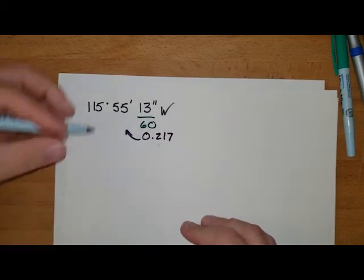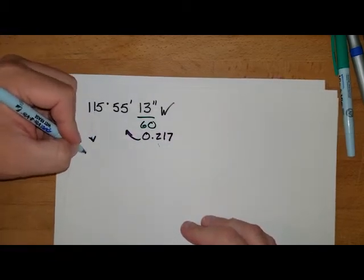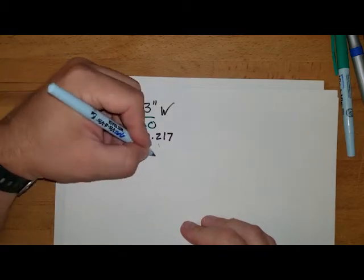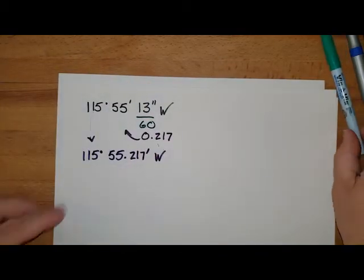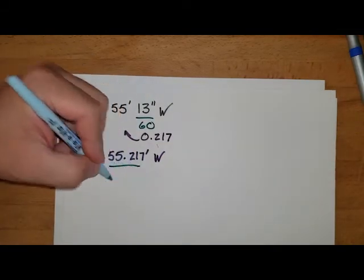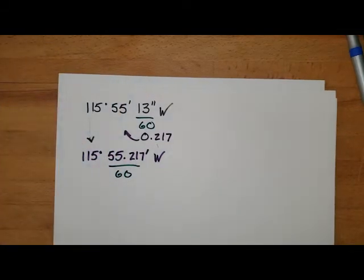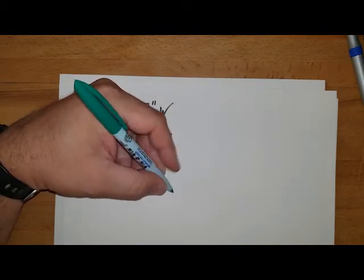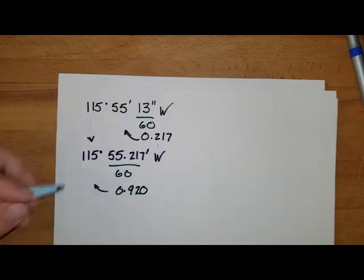I'm going to go with three significant digits. I take that, I add it to the next column over. This guy we're just going to bring down, and so I've got 115 degrees, 55.217 minutes west. Do I need to repeat? I do, because they're not all over two degrees yet. So I take this guy, I divide it by 60, and it's going to give me 0.9202. We're going to stop there. I add this to my next column over, and I get 115.920 degrees west.